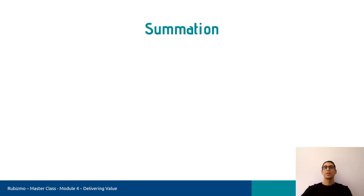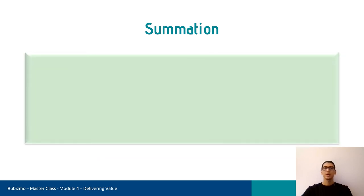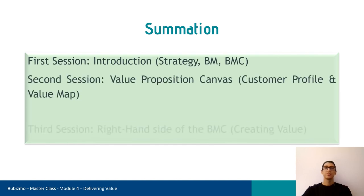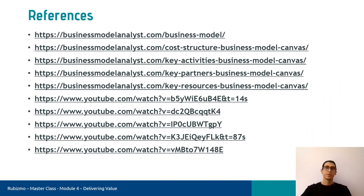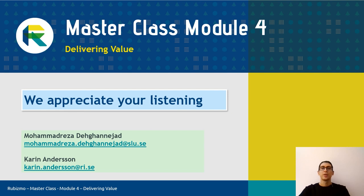Now we are done with the last session and I want to review what we have discussed in this four-module learning series. In the first session, we discussed strategy, business models, and the business model canvas. In the second session, we reviewed the value proposition canvas and worked on the value map and customer profile. The third session looked at the right-hand side of the business model canvas, called value creation. And today, we worked on the left-hand side of the business model canvas to see what is happening at the backstage. Here you can see our reference list, and if you have any questions, you are very welcome to send us an email. See you in the future and thank you so much for listening. Goodbye.